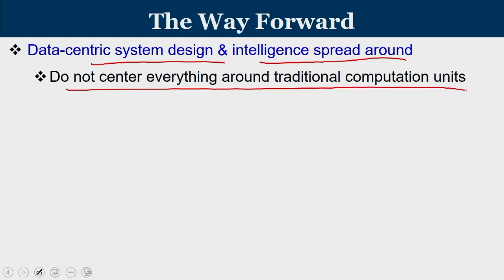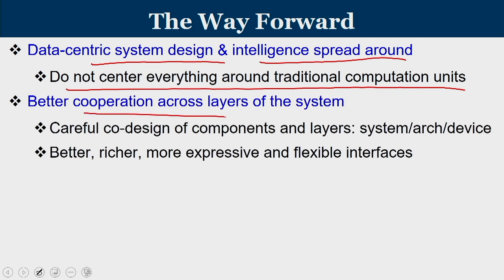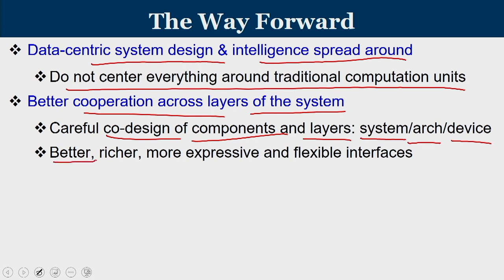We should not center everything around traditional computation units — we have to rethink our computational process from a different angle. We need better cooperation across layers of a system, something called co-design, rather than designing different components separately and putting them together. Can we have processors that talk more frequently with caches and try to know what the cache needs? That calls for careful co-design of components and layers at system, architectural, and device levels. We also need richer, more expressive, and more flexible interfaces between the processor and memory — interfaces that are more efficient and cooperative.